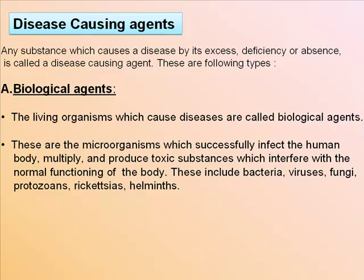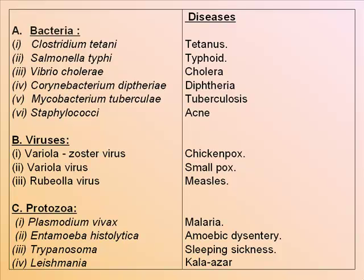Any substance which causes a disease by its excess, deficiency, or absence is called a disease-causing agent. Biological agents are living organisms which cause diseases, also called pathogens. These are microorganisms which successfully infect the human body, multiply, and produce toxic substances that interfere with normal body functioning. They include bacteria, viruses, fungi, protozoans, rickettsias, and helminths.